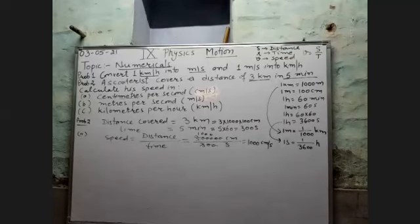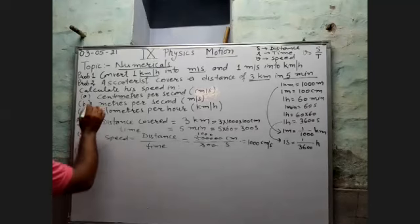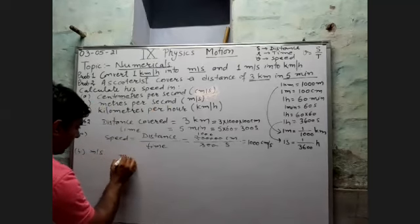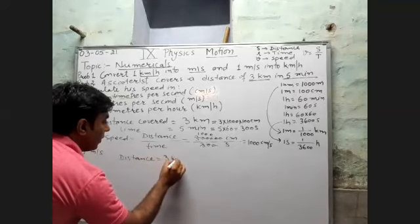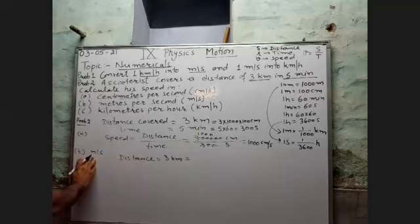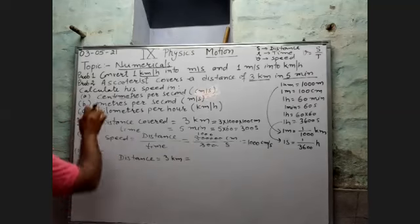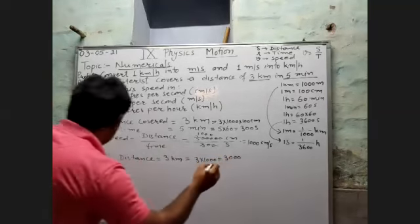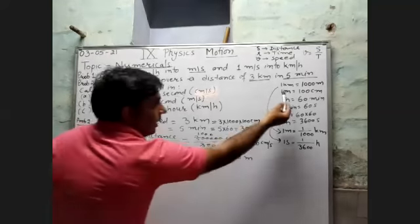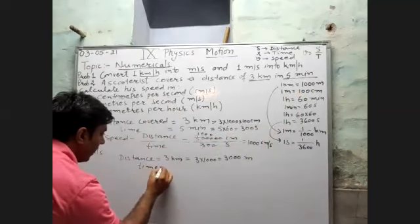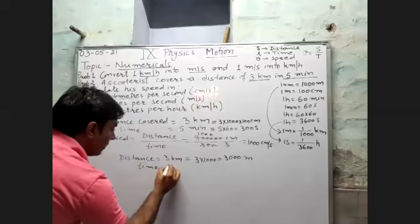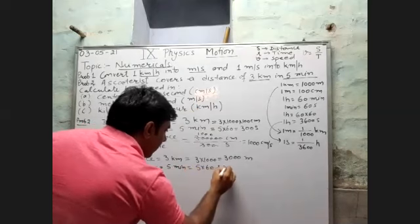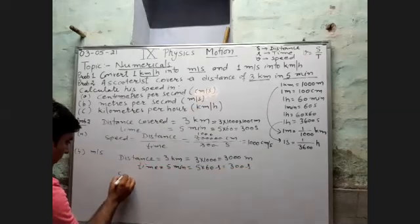Take a screenshot. Next is part b: find the speed in meter per second. Distance given is three kilometers — convert to meters: three multiplied by 1000 equals 3000 meters. Time taken is five minutes, which converts to 300 seconds.